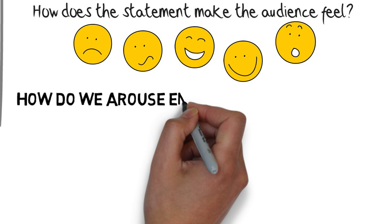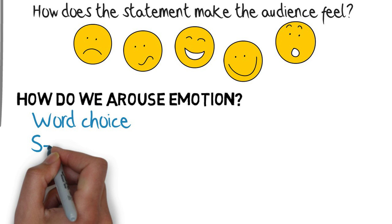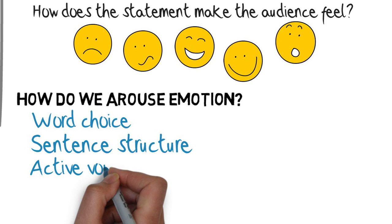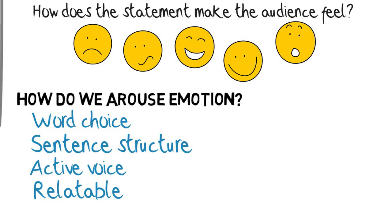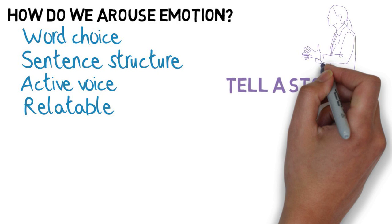And how do we do that? Well, one thing we can use is word choice — using words that have power, passion, and precision. Sentence structure: using an active voice rather than a passive voice to get the reader to relate to the protagonist in your case. Also, we want to tell a story — tell a compelling story. This shows us the power of storytelling in the law. What is the narrative that you want to express? How can we get the listener to relate to or empathize with the account?